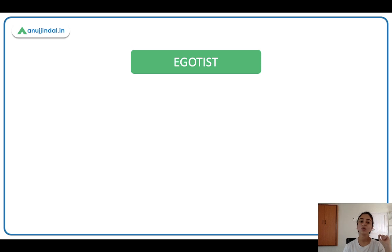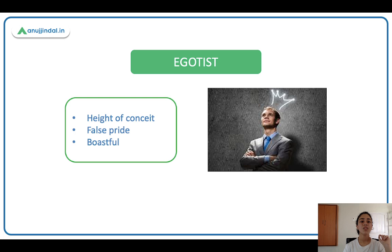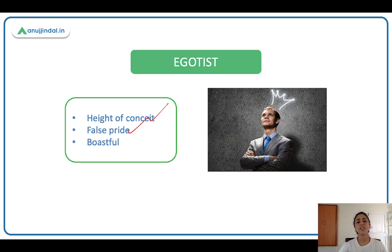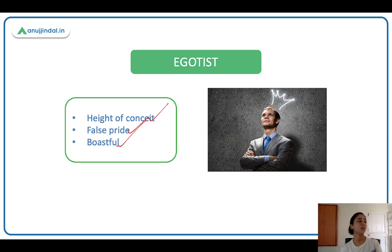Next is egotist. Who's an egotist? Someone who has false pride — a height of conceit, meaning having excessive pride and thinking very highly of yourself. Putting yourself on a pedestal: 'I am the best, I have achieved this, I'm very successful, nobody can beat me.' That's false pride. And they are boastful — they like to brag and show off. 'I have so many expensive shoes, expensive watches, I went on this expensive vacation.' Such a person is called an egotist.